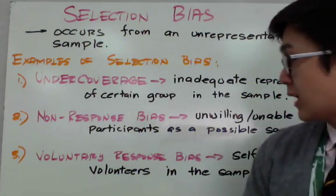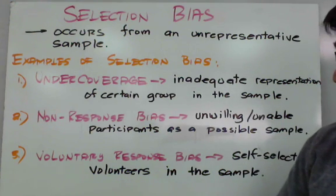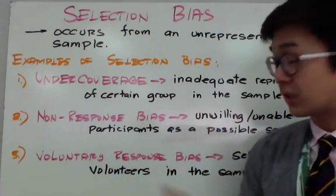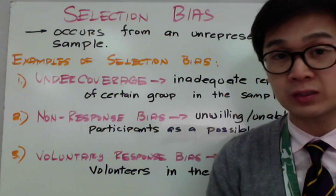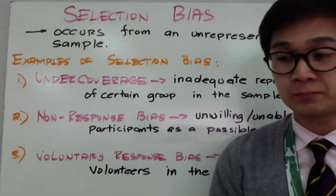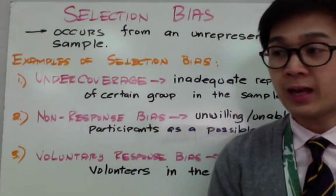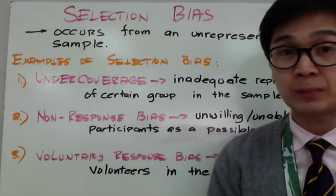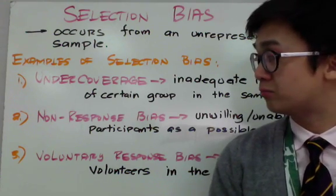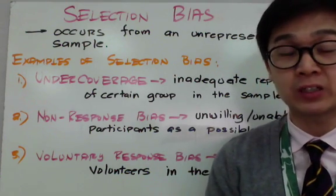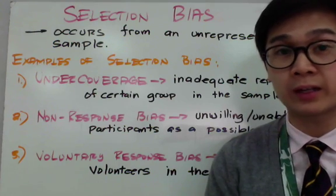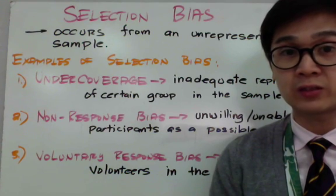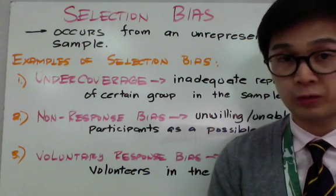The third type is voluntary response bias, where self-selected volunteers are usually present in your sample. An example is when a radio station DJ takes a poll on a certain topic — only people who have a strong opinion on that topic will call in, while people who don't have any view won't bother calling. So this is voluntary response bias because only people interested in giving their opinion will call the radio station.